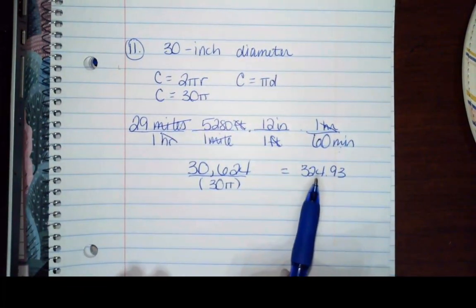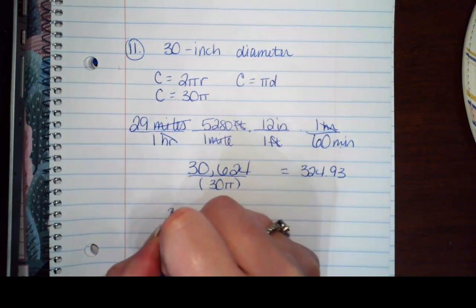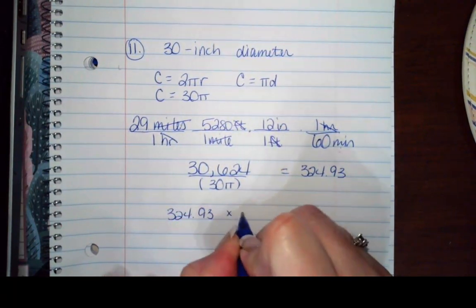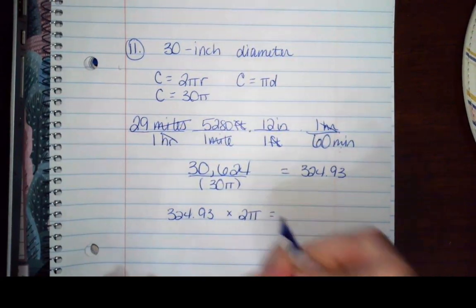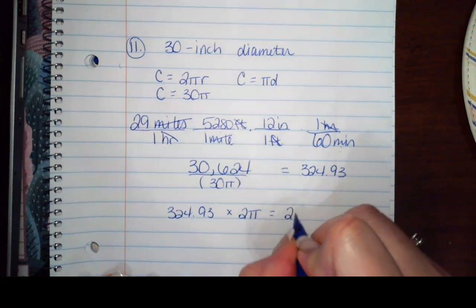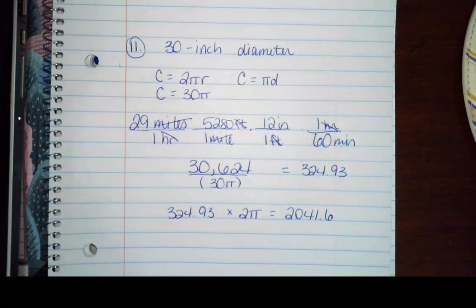From that information, I can find the angular speed just by multiplying by 2π. So this is how many revolutions I've got. So I'm going to take 324.93 times 2π, and that's going to give me an answer of 2,041.6. So that is your radians per minute.